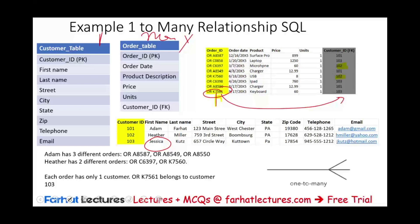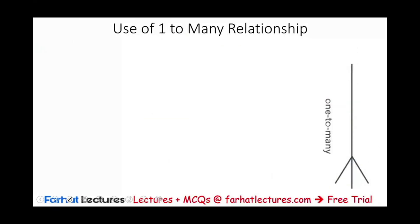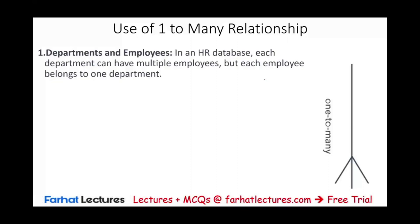This is how we show the one-to-many relationship: one on the customer side, and many on the orders side. Where can you see this in the real world? In an HR database, each department can have multiple employees, but each employee belongs to only one department — that is a one-to-many relationship.